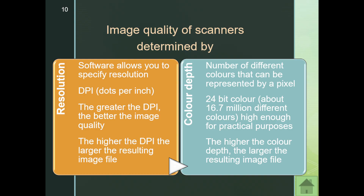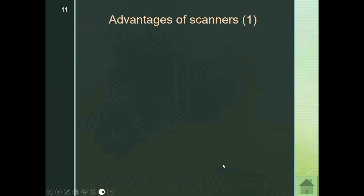The second quality factor for scanners is color depth — the number of different colors that can be represented by a pixel. When you see 24-bit color, that represents about 16.7 million different colors, which is high enough for practical purposes. The higher the color depth, the larger the resulting image file. So higher resolution and color depth give better images but also larger file sizes.